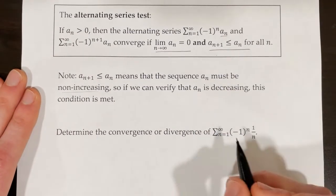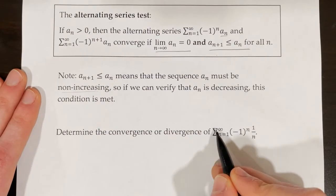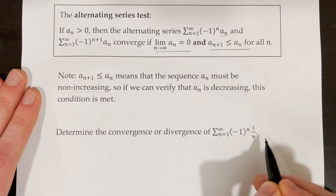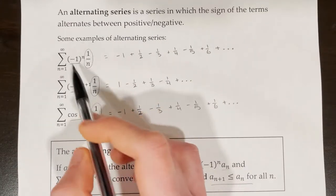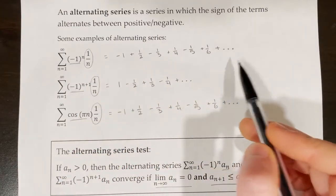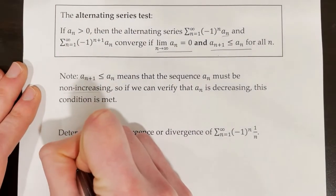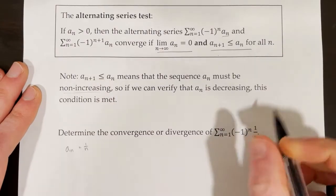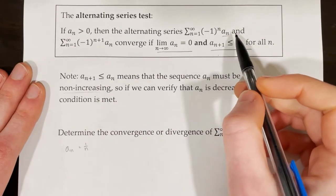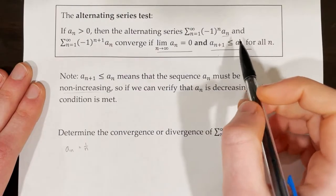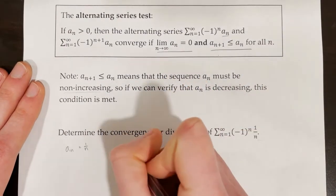Let's try an example: determine the convergence or divergence of the series from n equals 1 to infinity of negative 1 to the power of n times 1 over n. This is the same series we looked at earlier, so we know it's alternating. We define a sub n as 1 over n, the non-alternating portion. To prove convergence, we take the limit as n approaches infinity of a sub n and verify it equals 0.